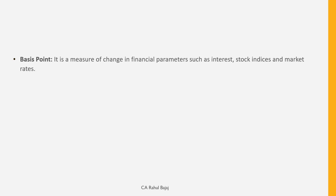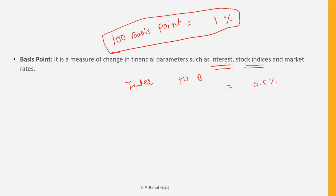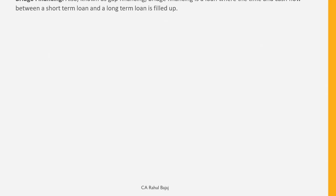The next term is Basis Point. You may come across this in day-to-day financial news. 100 basis points equals 1%. So if the interest rate increases by 50 basis points, that means 0.5%. If the market rate changes by 25 basis points, that means 0.25%. Basis points are used for interest rates, stock indices, and market rates.